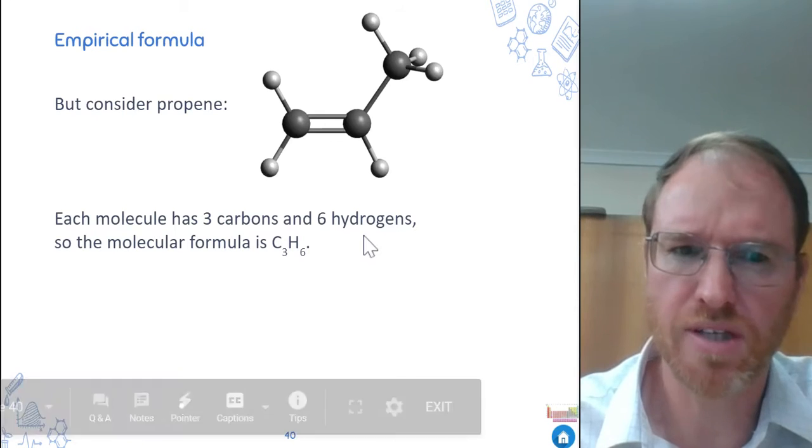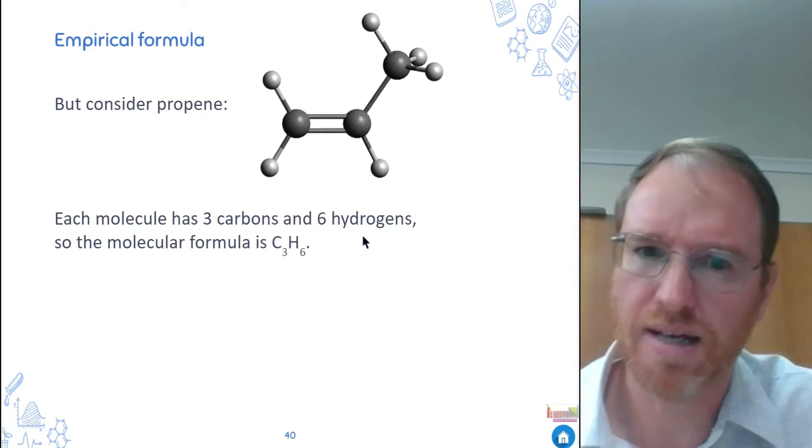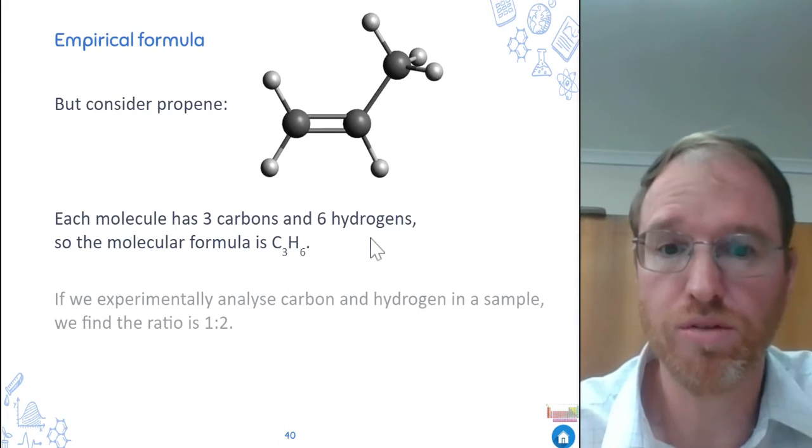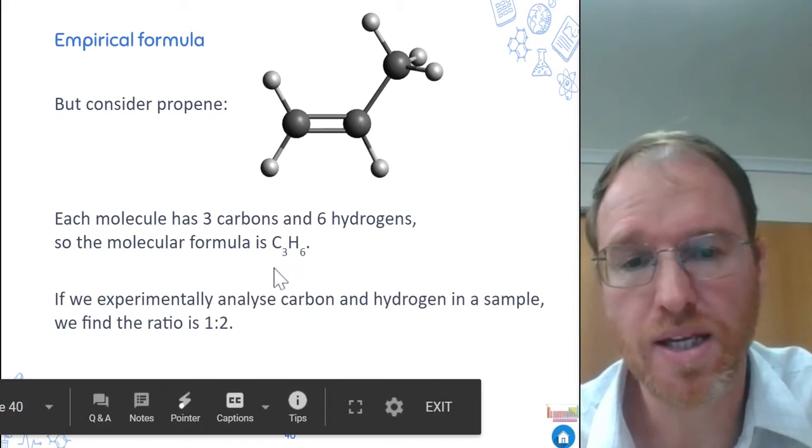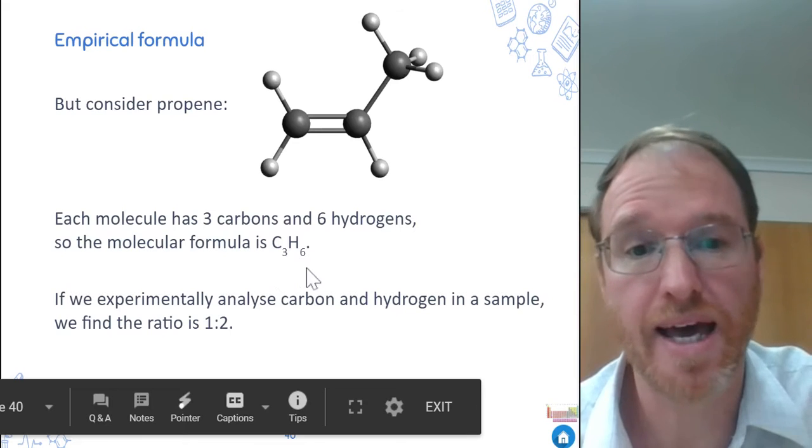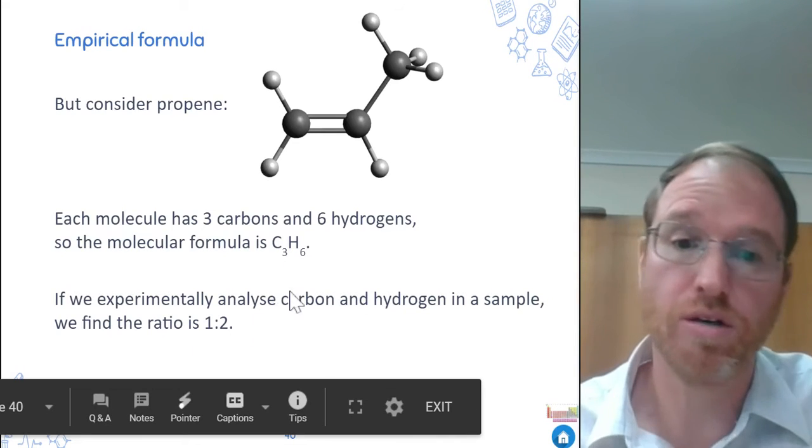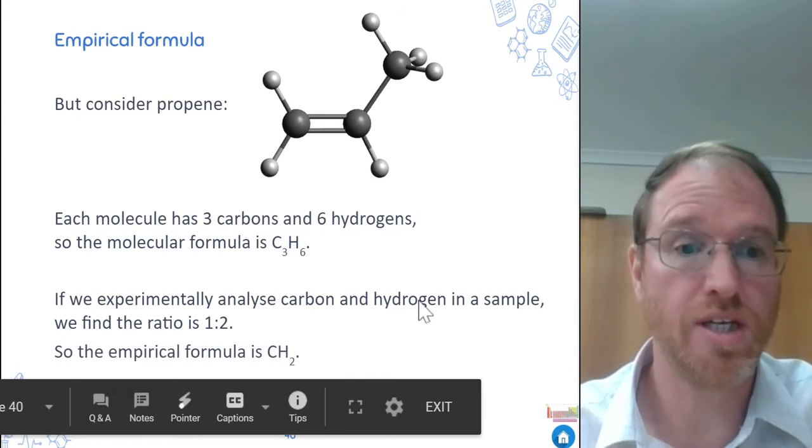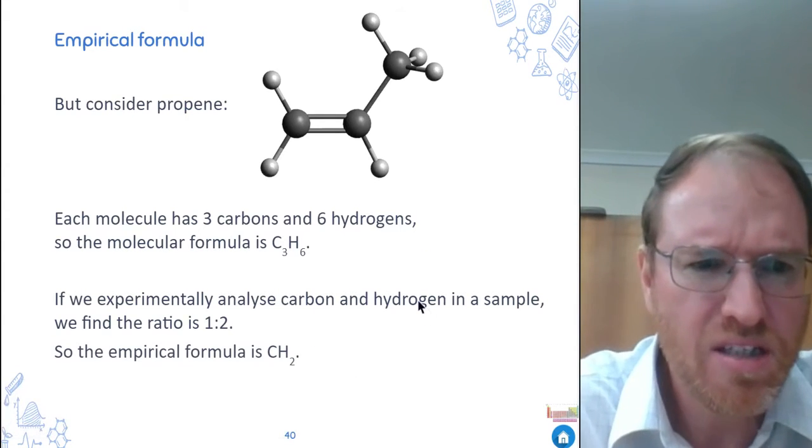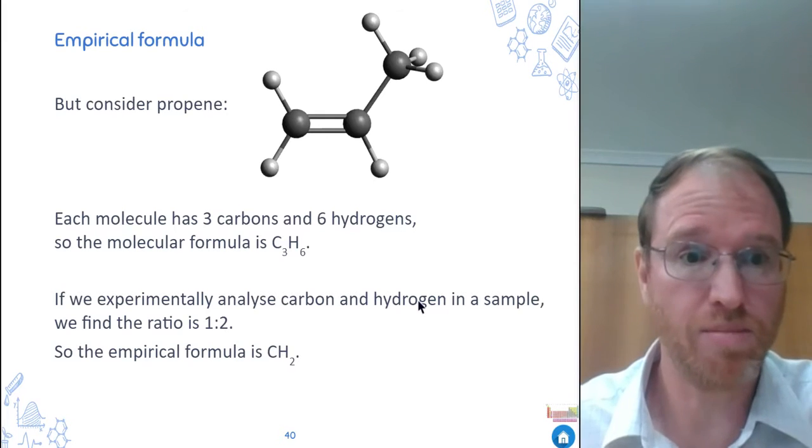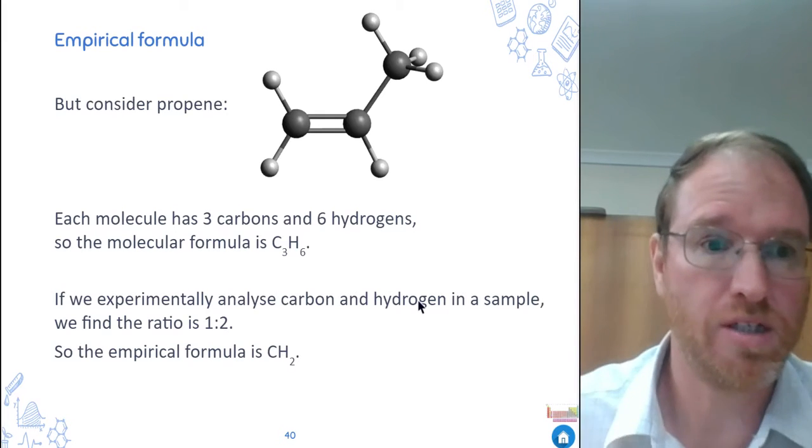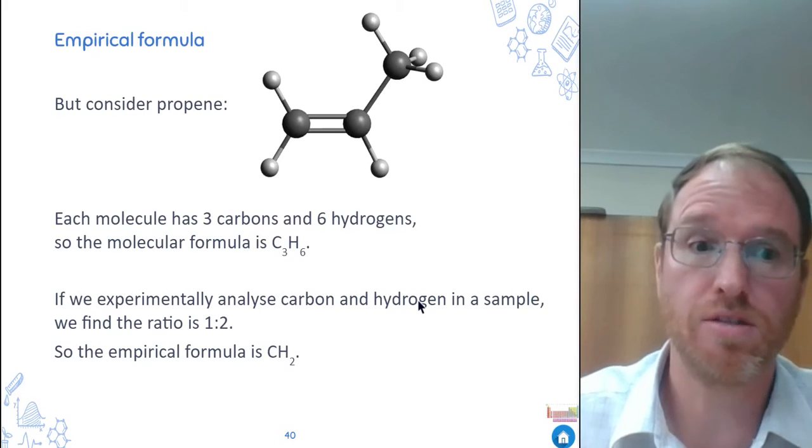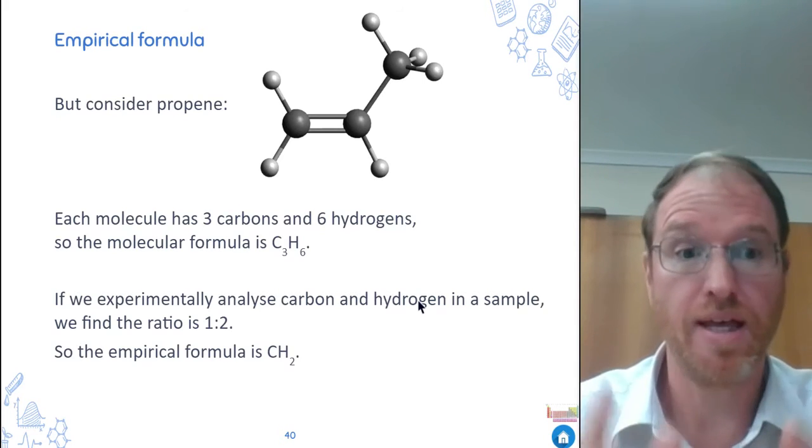But if we just analyzed a sample to find the percentage carbon and the percentage hydrogen, and we worked out the ratio of atoms, we would find there are twice as many hydrogen atoms as carbon atoms. We would get a carbon-hydrogen ratio of one to two. And when we make a formula based on that, we would just get CH2. We can't see the individual molecules when we analyze the sample. We can't see that there's three carbon joined to six hydrogen. All we see when we analyze it is that there's twice as many hydrogen atoms in that sample as carbon atoms.